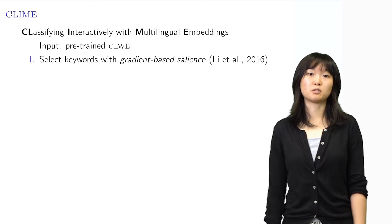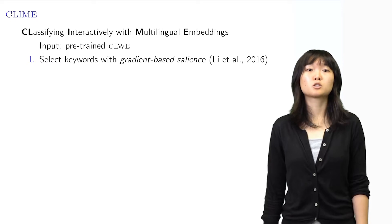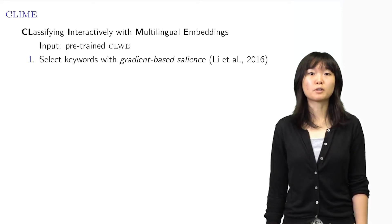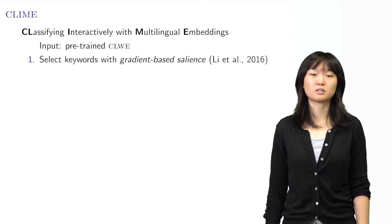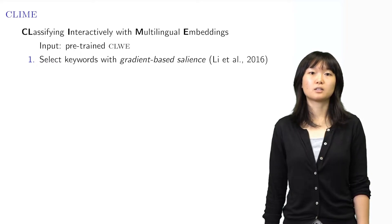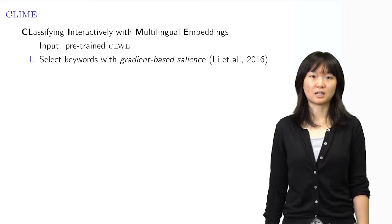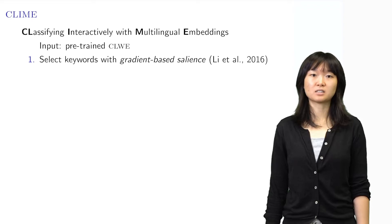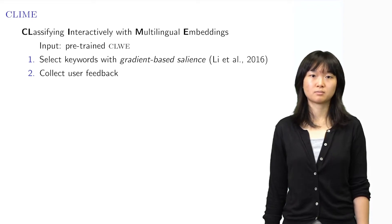First, it's impossible to inspect every word embedding, so we ask the user to focus on a small set of keywords and their nearest neighbors in the embedding space. The keywords are selected with gradient-based salience, which is inspired by ideas in interpreting neural networks.